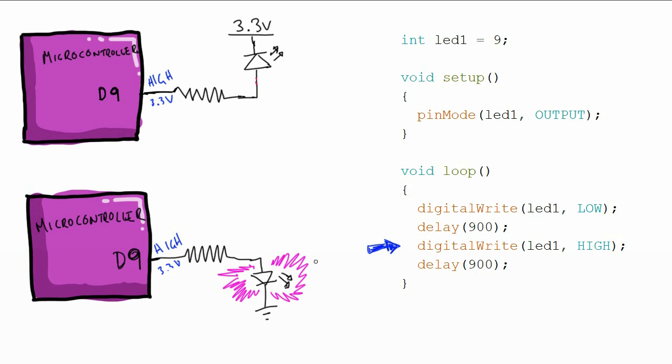Now, both of these connections are valid, and they pretty much do the same thing, except for the logic is inverted. So, what we call this is active high and active low.